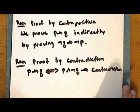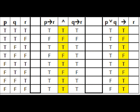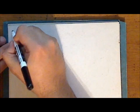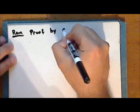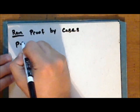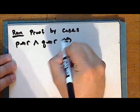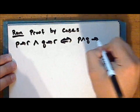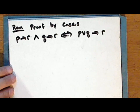From this truth table, we can see that the implication P implies R and the implication Q implies R is logically equivalent to the implication P or Q implies R. Another important method of proof to be aware of is proof by cases. This method is based on the logical equivalence that P implies R and Q implies R is logically equivalent to P or Q implies R. We use this method when we must consider two or more cases.